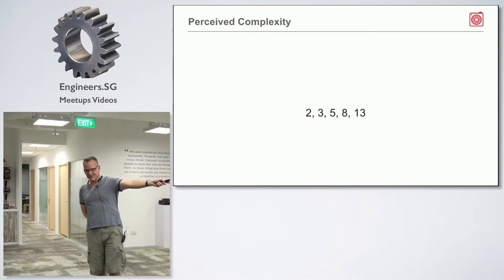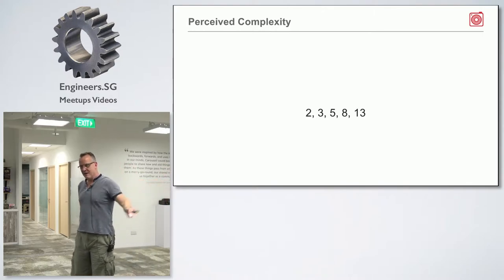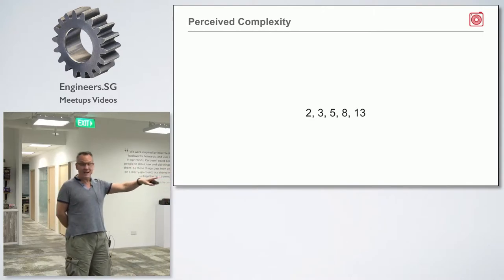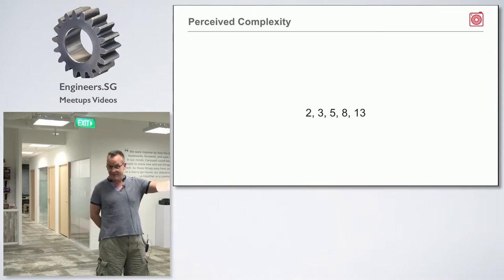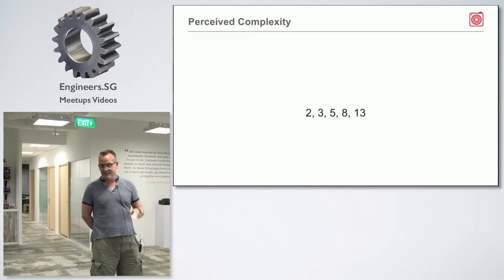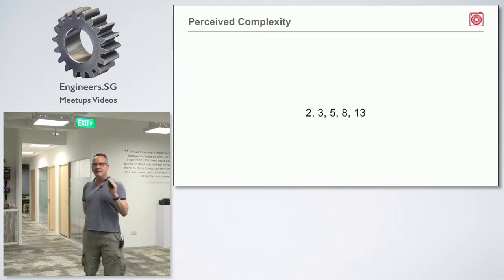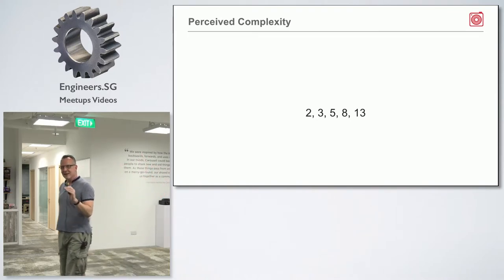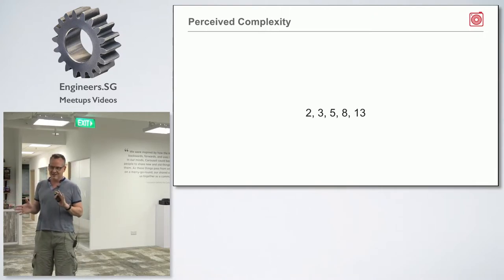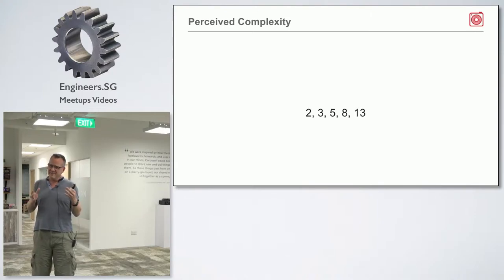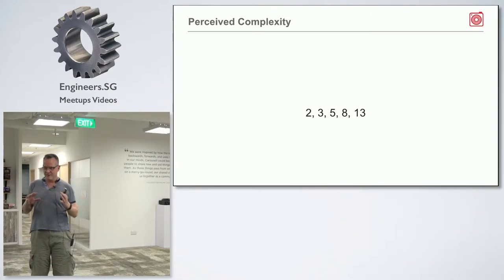Why use the Fibonacci sequence for estimation? Because it forces you not to go in a linear sequence. Instead of adding one each time, you're forced to think: does this feel like a three or does it feel like a five? It keeps you thinking in meaningful steps rather than tiny increments.